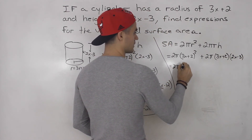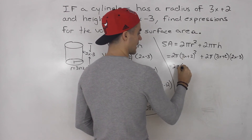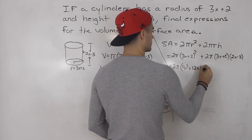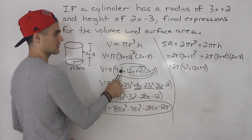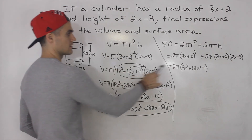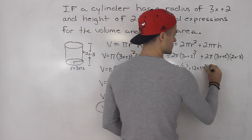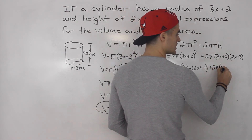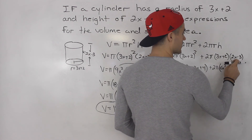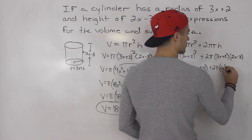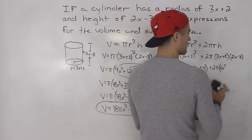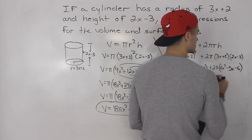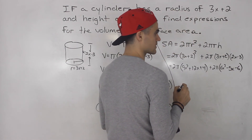Expanding everything here, 3x plus 2 squared gives us 9x squared plus 12x plus 4 — the exact same thing we got before. And then for the 2 pi r h term, 3x plus 2 times 2x minus 3 gives us 6x squared minus 9x plus 4x, which simplifies to 6x squared minus 5x minus 6.